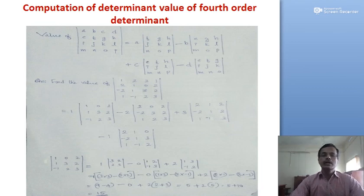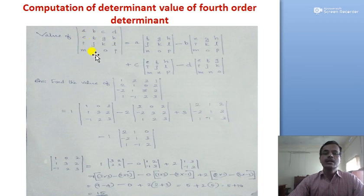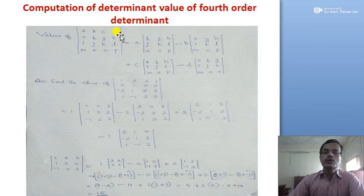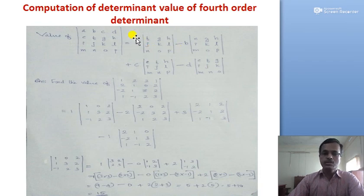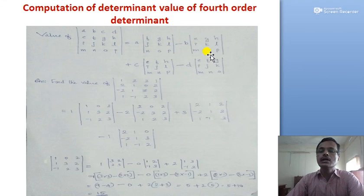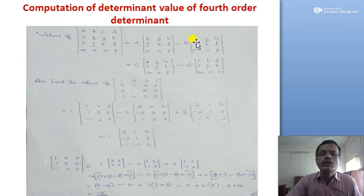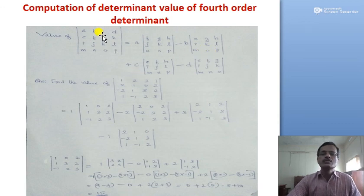Now let us look at the fourth order determinant. Consider a 4×4 determinant with elements a, b, c, d in the first row; e, f, g, h in the second row; i, j, k, l in the third row; and m, n, o, p in the fourth row. We expand along the first row. The element A is multiplied by the 3rd order determinant of elements f, g, h; j, k, l; n, o, p. Then minus B multiplied by its corresponding 3rd order determinant, plus C multiplied by its 3rd order determinant, minus D multiplied by its 3rd order determinant.